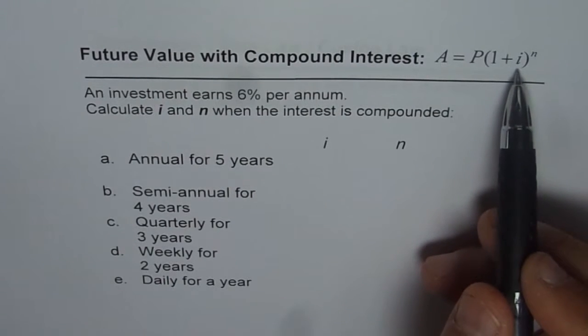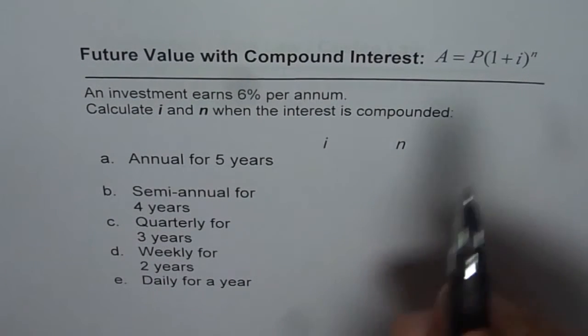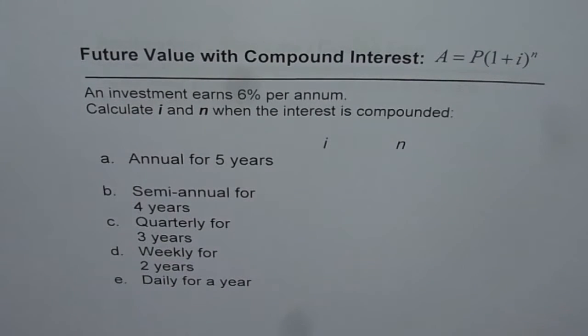So if the compounding period is quarterly you have to divide that interest rate per annum by 4. So this exercise will help you understand it in more details.